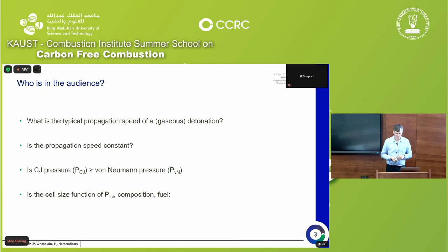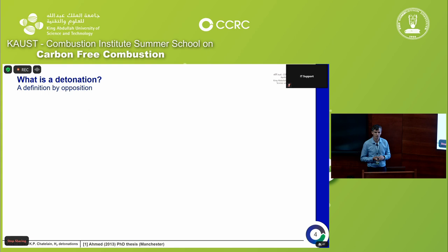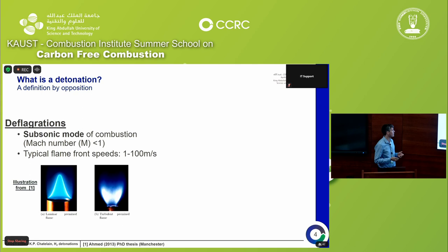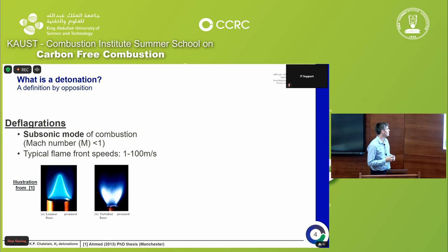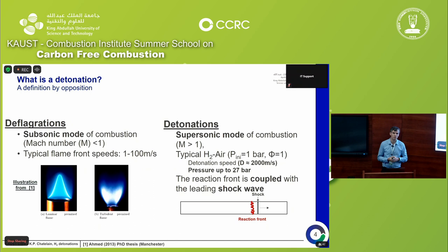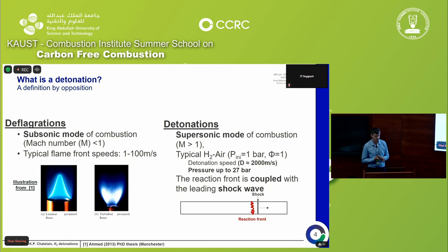I'll start with a short definition. The most common definition is done by opposition. Detonations are frequently opposed to deflagration, which is a conventional subsonic mode of combustion with a Mach number lower than one, and typical flame speeds in the range of one to 100 meters per second — the mode you have in a classical laminar or turbulent premixed flame, such as at home or at a barbecue. Detonations, by contrast, are a supersonic mode of combustion with Mach number greater than one. For a typical hydrogen-air detonation at initial conditions of one bar, you can reach a detonation speed of around two kilometers per second and a peak pressure around 30 bar.